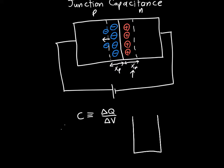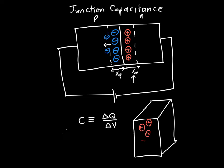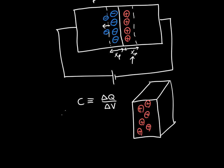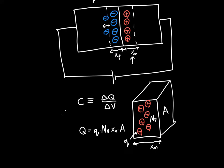To calculate the total charge within the n region, we need to consider it in three dimensions. We've got a bunch of positive charges — our charged ions — in there. The n region has a width xn and a cross-sectional area A. Each charge contributes q amount of charge and their density is Nd. So the total charge Q is just q times Nd times the volume, which is xn times A.